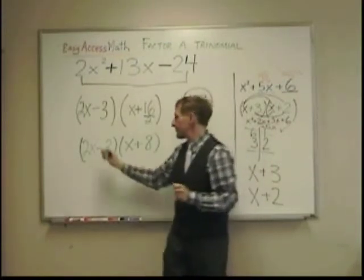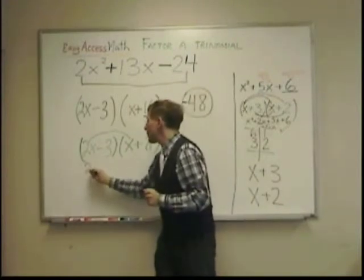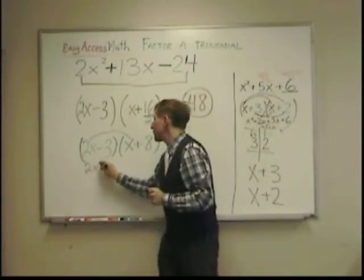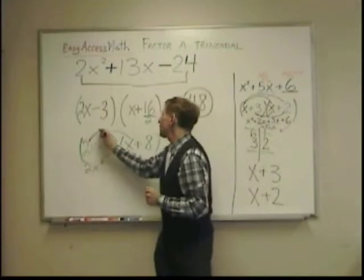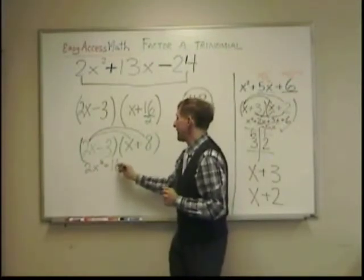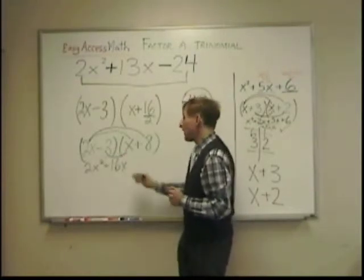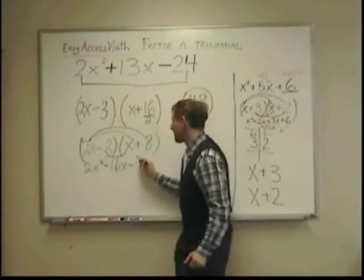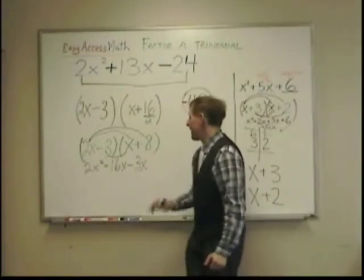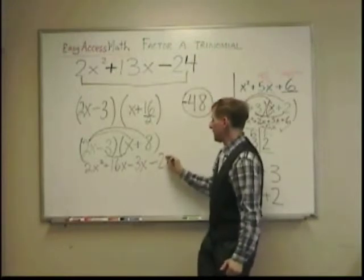Let's FOIL to check. 2x times x is 2x squared. 2x times positive 8 is positive 16x. Negative 3x, uh, negative 3 times x is negative 3x. And negative 3 times positive 8. There's my negative 24.